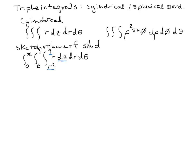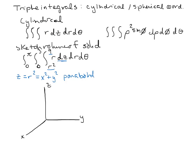Looking at this function, Z equals R squared, and in cylindrical coordinates R squared equals x squared plus y squared. So if Z equals x squared plus y squared, that is a paraboloid. The upper bound says we stop at a height of Z equals 9, so we have a paraboloid that stops at Z equals 9.